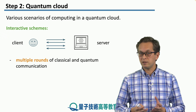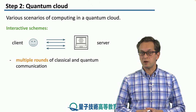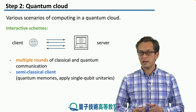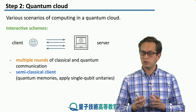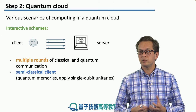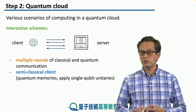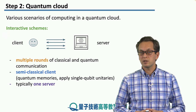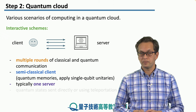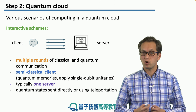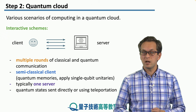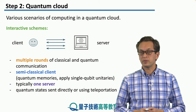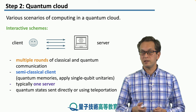All of the interactive schemes we consider in our lessons will include multiple rounds of both classical and quantum communication, and the client will always be semi-classical. So the client will have some quantum memory capabilities and will be able to apply single qubit unitaries or generate single qubit states. Typically all of these schemes are between a client and a single server, and the states communicated from client to server can be sent directly or via quantum teleportation using pre-shared entangled Bell pairs between the client and the server.